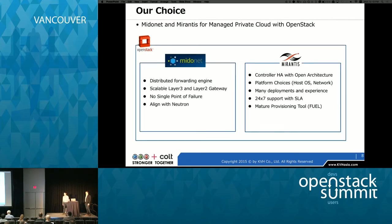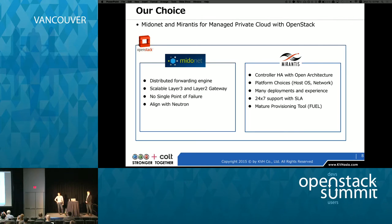So this is our choice: we chose Mitonet for networking, and Mirantis for the controller HA. The reason we chose Mitonet is their architecture is really scalable, there is no single point of failure, and they are aligned with OpenStack and 100% committed to Neutron. Mirantis already has more than 100 deployment experiences and they have a certain proven architecture for controller HA.